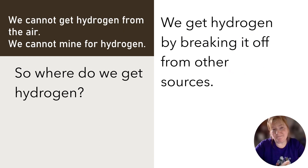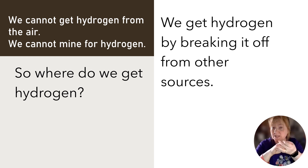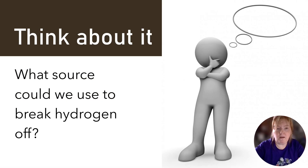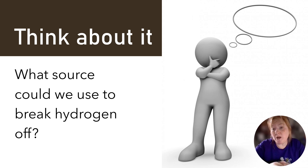Well, guess what? We can't really get hydrogen from the air — there's not a lot of it. And we can't mine for it. So where do we get hydrogen from? We get hydrogen by breaking it off from other sources. It's a part of other sources, and we break it off and take the hydrogen. What sources do you think we could use to break hydrogen off? Think about what things hydrogen is a part of.